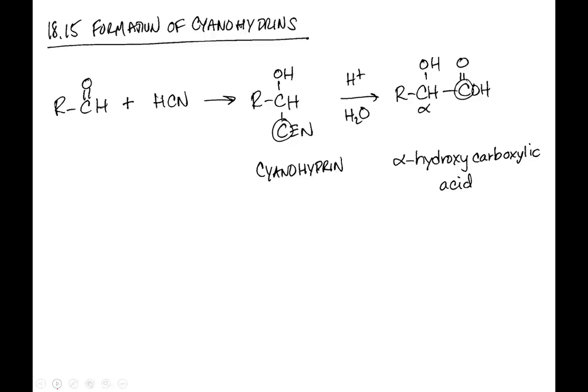The last reaction for today: I can form a cyanohydrin. What we do is add cyanide — not hydrogen cyanide directly, because HCN is a gas and will kill you. Instead, we take CN⁻, react it with the carbonyl to form the alkoxide, then add H+. So most places describe it as adding CN⁻ then H+, abbreviated as HCN. The product is called a cyanohydrin.